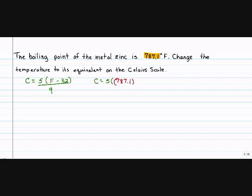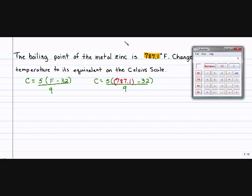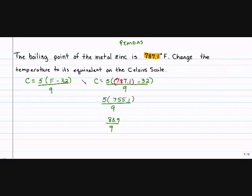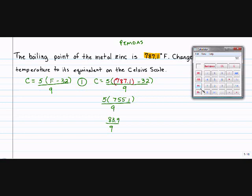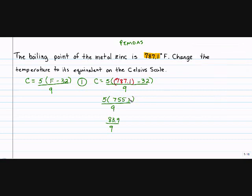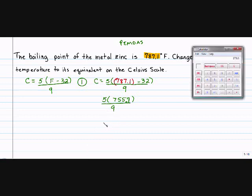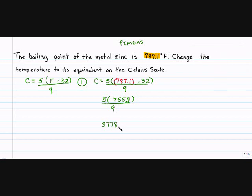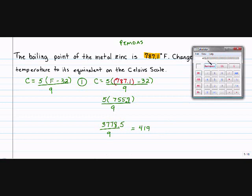So C equals 5 times my Fahrenheit, which is 787.1. I always put it inside parentheses. Minus 32 divided by 9. And I have to follow order of operations. 787.1 minus 32 gives you 755.7. Now I'm going to multiply it times 5, which is 3778.5. And then I'm going to divide that by 9, and that roughly gives me 419 or 420 degrees Celsius.